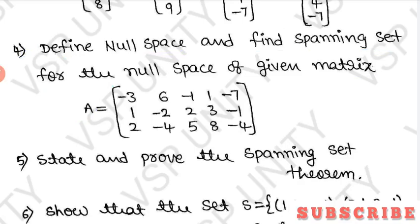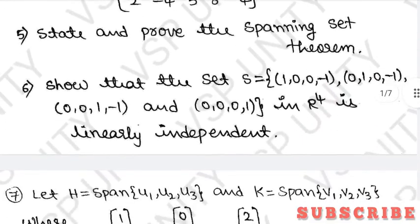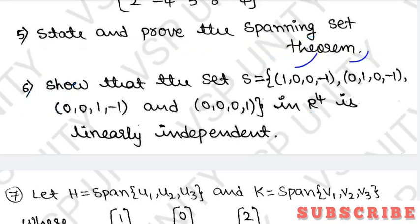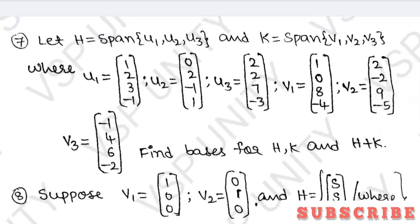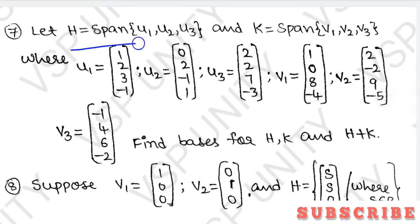The most important theorem in the first unit is: state and prove the spanning set theorem. The spanning set theorem is a key question in unit one. Next, sixth question — this type of question can come as a long answer or a short answer. Four points are given: determine if they form a linear independent set. Seventh question: let H equal span of u1, u2, u3 and K equal span of v1, v2, v3.